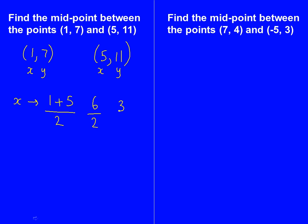Do the same now for the y coordinates. So the two y coordinates are 7 and 11. We add them up and because we're finding the midpoint, we divide by 2. 7 add 11 is 18. Divided by 2 is 9.